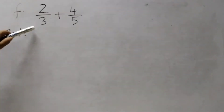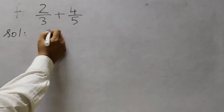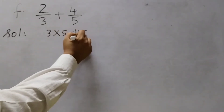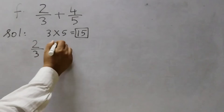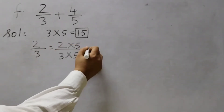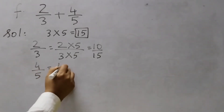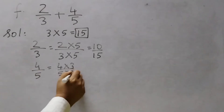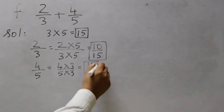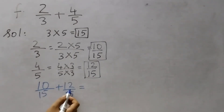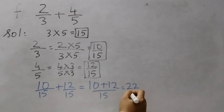Moving on to the next one — question F: 2/3 + 4/5. Different denominators, so we need to find the smallest common multiple: 3 × 5 = 15. For 2/3, multiply by 5: 2 × 5 = 10, 3 × 5 = 15, giving 10/15. For 4/5, multiply by 3: 4 × 3 = 12, 5 × 3 = 15, giving 12/15. Adding: 10/15 + 12/15 = 22/15.